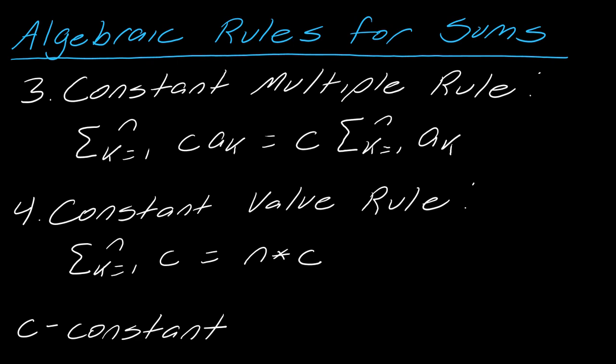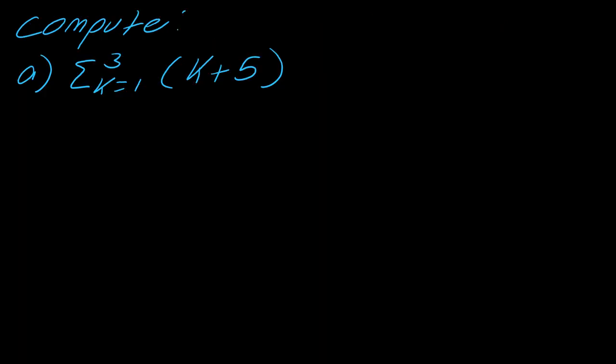And then also I have these other rules. So again, maybe pause and write these down. This is saying if I have some constant C that's being multiplied by a term, I can just factor that C out, do the sum, and then at the end multiply it by that C. And then this one's actually very handy. If you have a sum that is just a singular number, you can figure out the value of this sum by just taking n times that constant C.